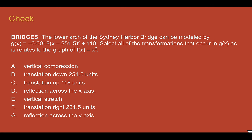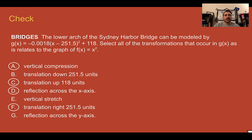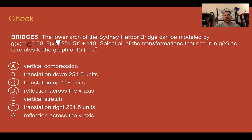Check your understanding: read through the situation and select any of the transformations that occur as it relates to the parent function. Pause the video now and complete the check. Check your answer: it was a vertical compression — the coefficient is between 0 and 1 and outside the parentheses. It was translated up 118 — that plus 118 at the end. Reflected across the x-axis — the negative is out front. And translated right 251.5 — that minus we think left, but it should have been right.